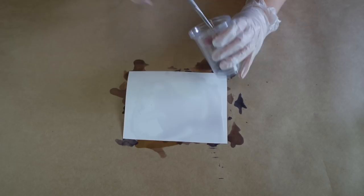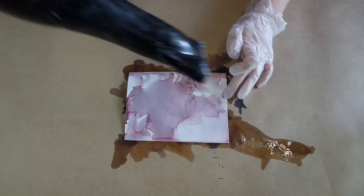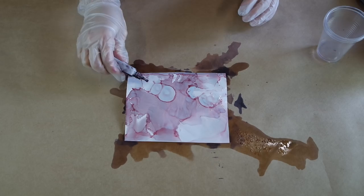The second technique I'm going to show you is where you put down the alcohol first and then you put your inks on top. Then you can either blow with a straw or you can use your hairdryer. Sometimes I do prefer to use a straw because it's not as strong as a hairdryer, so it depends on the effect you're trying to create.